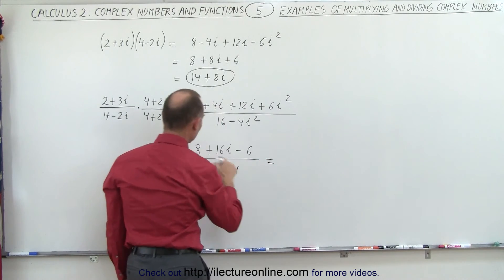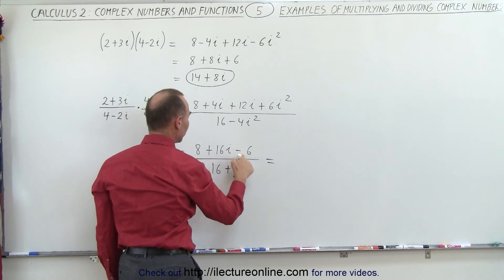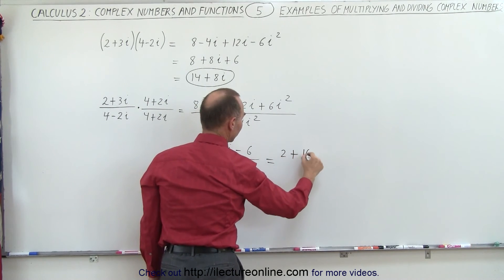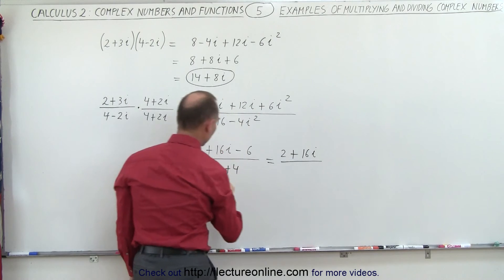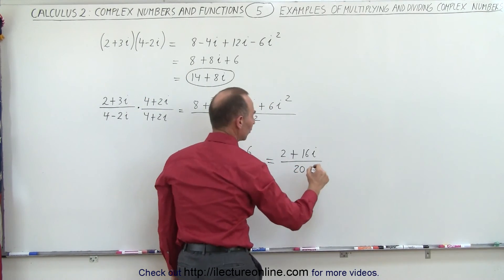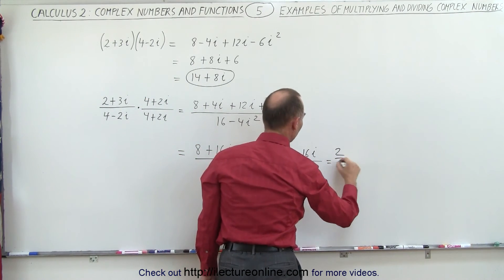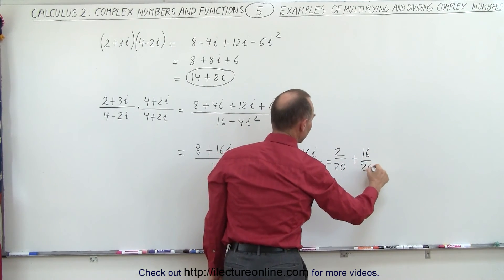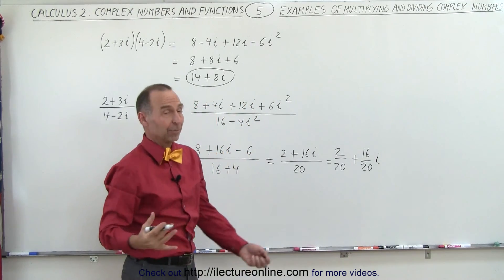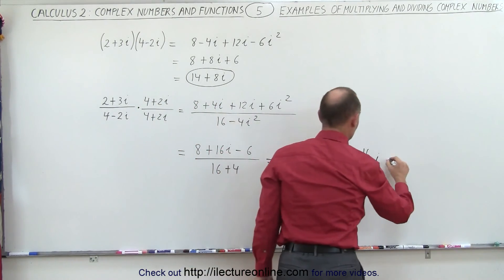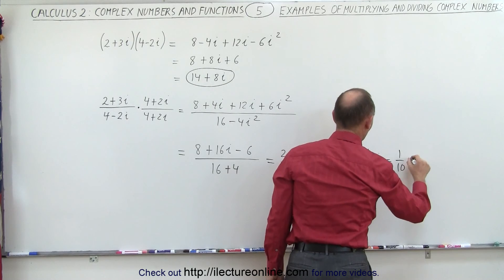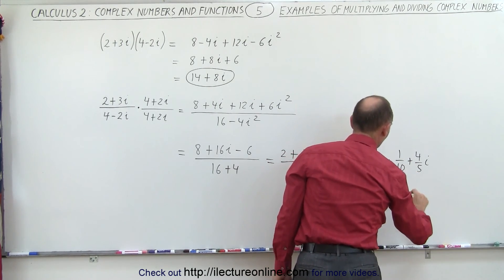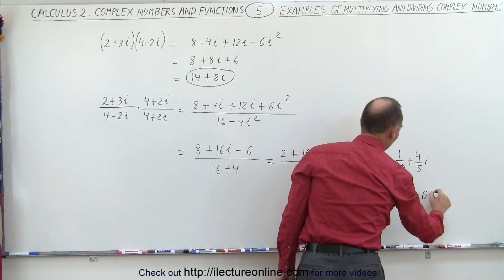Simplifying a bit further, we combine in the numerator the two real parts: 8 minus 6, which is 2. So we get 2 plus 16i, and in the denominator we get 16 plus 4, which is 20. This can be written as 2 over 20 for the real part, plus 16 over 20i for the imaginary part. Simplified, this is 1 tenth plus 4 fifths i, or equivalently 0.1 plus 0.8i.